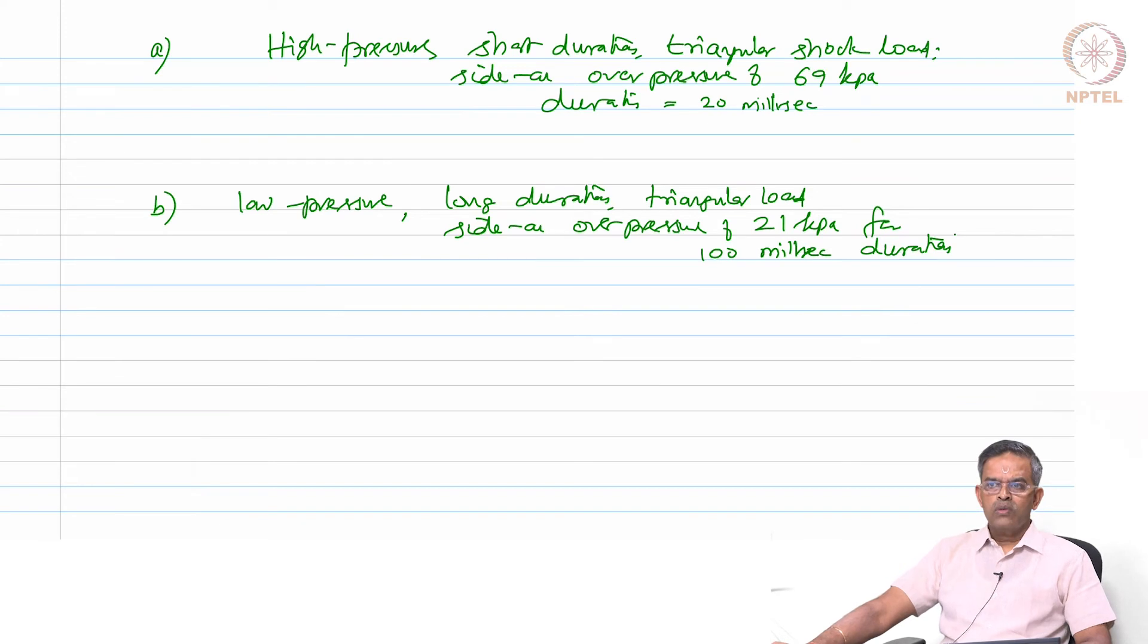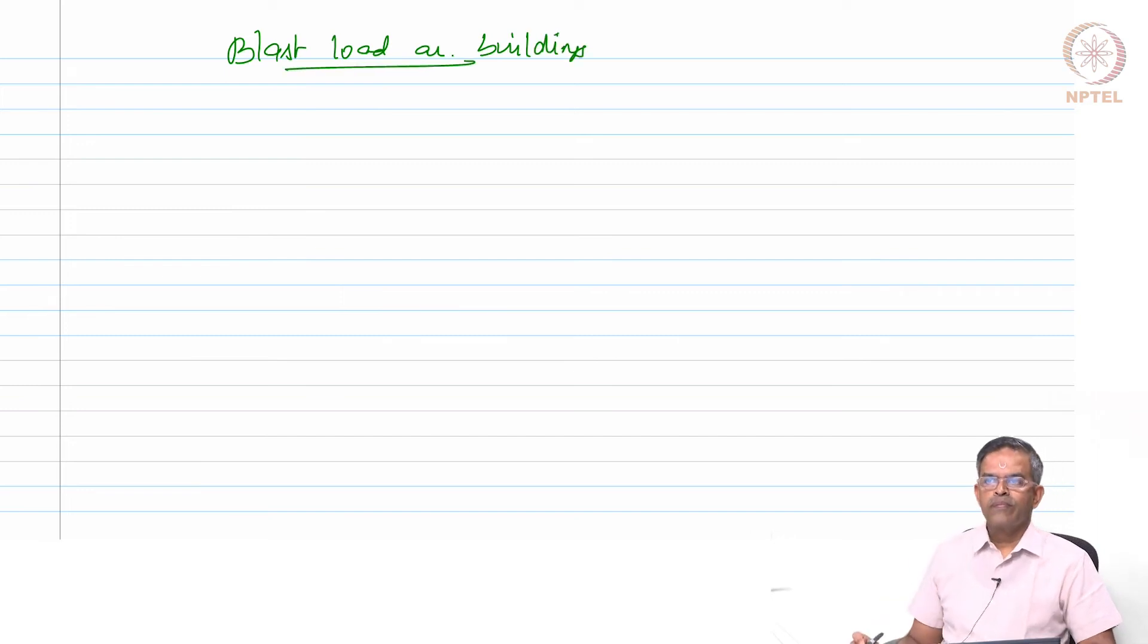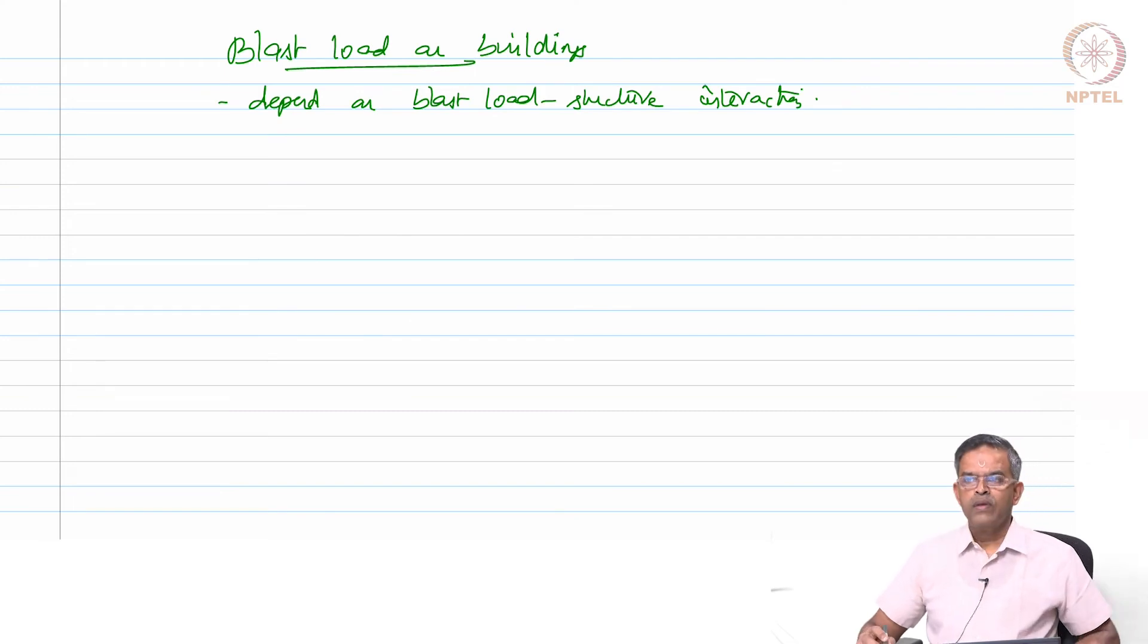Let us now talk about blast loads on buildings. To design the blast resistant building, loads on the building as a whole or on individual elements should be determined. So therefore, we need to understand the blast wave interaction to obtain these loads. So blast load on buildings depends on blast load-structure interaction.